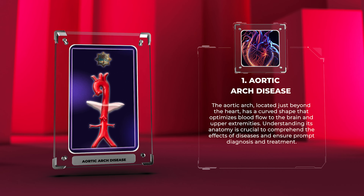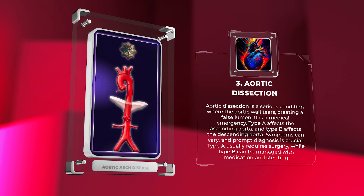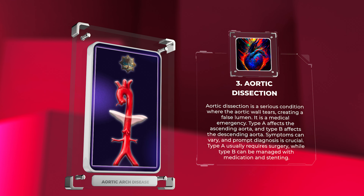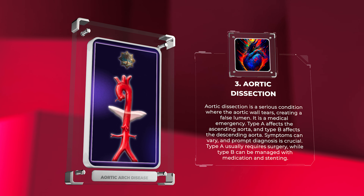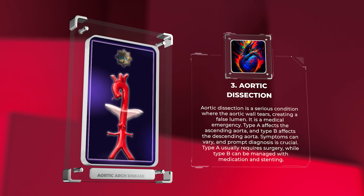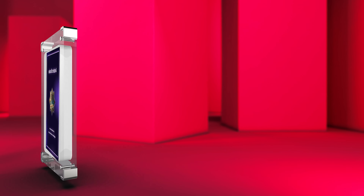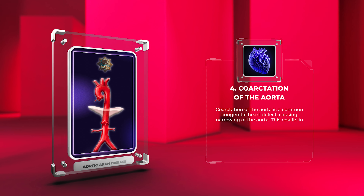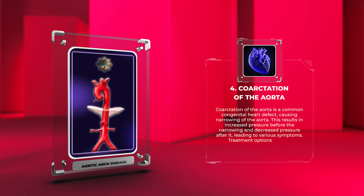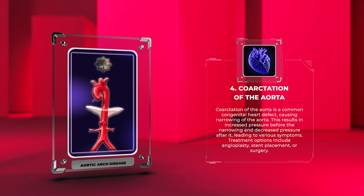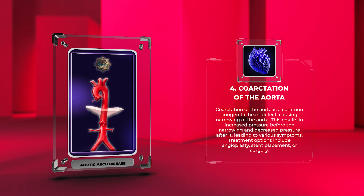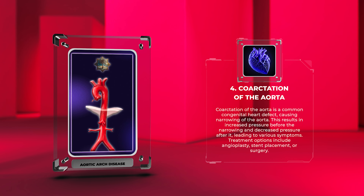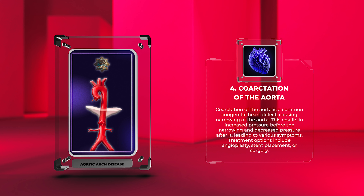Aortic dissection is a medical emergency. Type A affects the ascending aorta and Type B affects the descending aorta. Symptoms can vary and prompt diagnosis is crucial. Type A usually requires surgery, while Type B can be managed with medication and stenting.